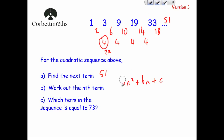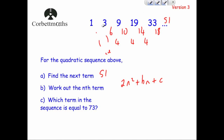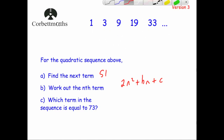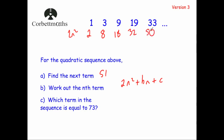Since a = 2, the nth term is 2n² + bn + c. To find bn + c, we compare the given sequence to the 2n² sequence. The 2n² sequence is: 1²×2 = 2, 2²×2 = 8, 3²×2 = 18, 4²×2 = 32, 5²×2 = 50. So the 2n² sequence is 2, 8, 18, 32, 50.